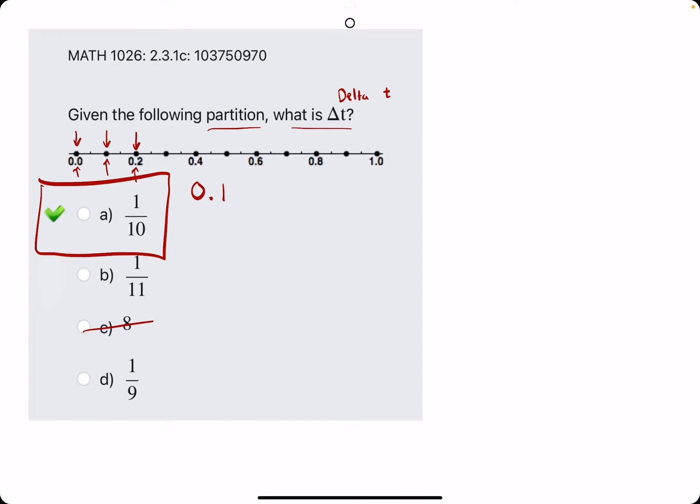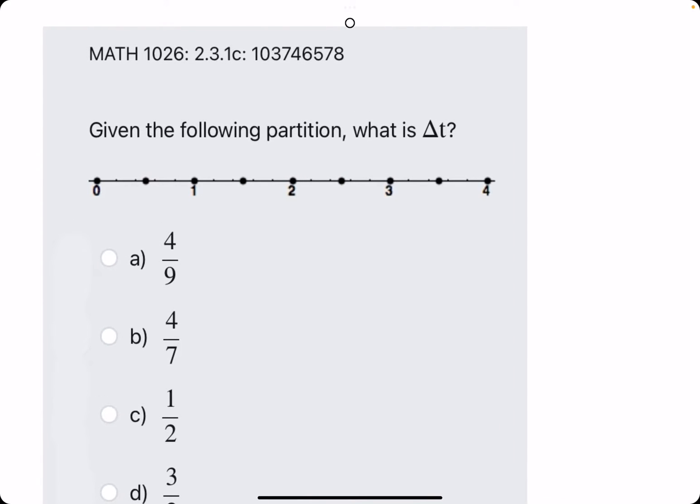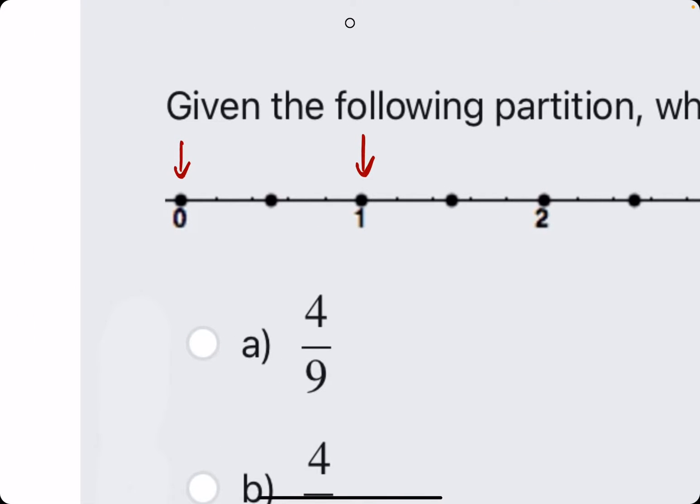All right, let's go and do a couple more. Given the following partition, what is delta t? Again, just the difference between two points. So if we use these as reference points, zero and one, we know that halfway between zero and one must be one half.